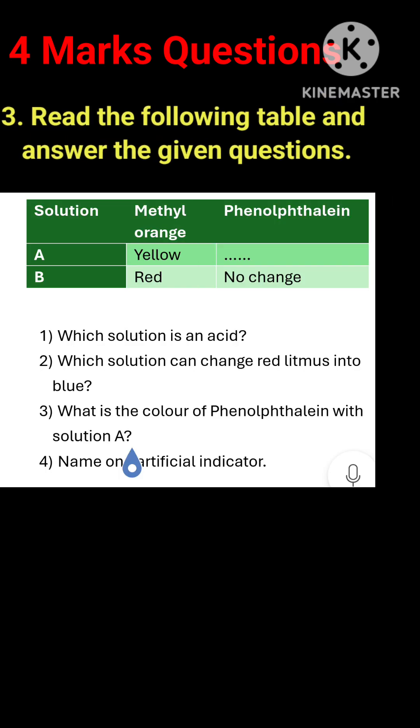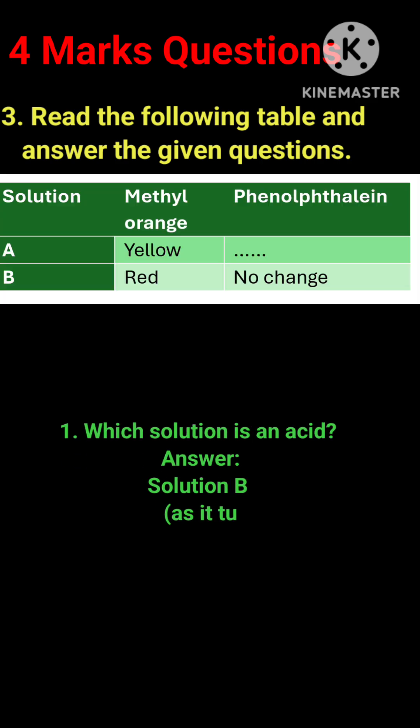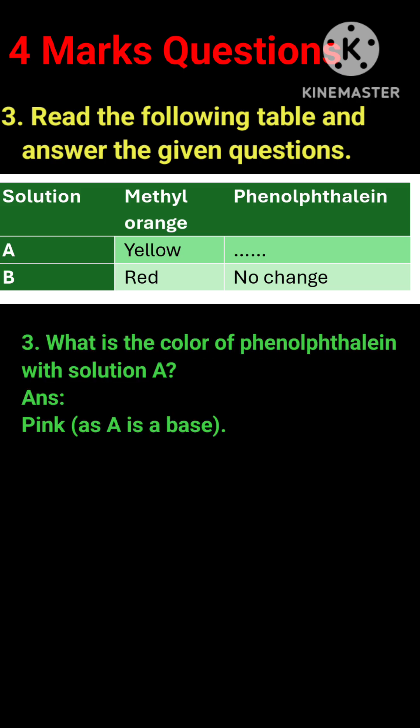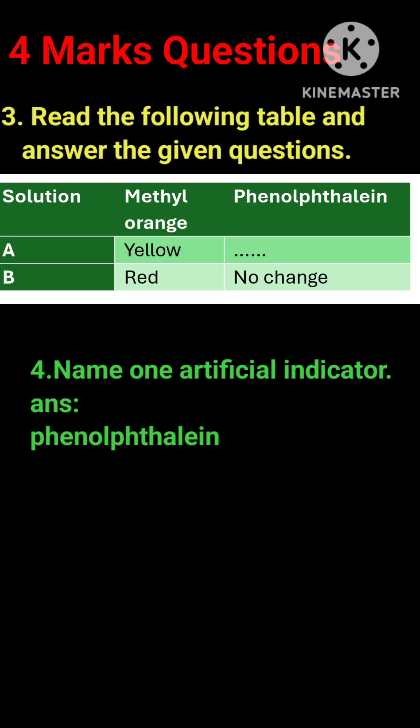Question 3: Read the following table and answer the given questions. (1) Which solution is an acid? Answer: Solution B, as it turns methyl orange red. (2) Which solution can change red litmus into blue? Answer: Solution A, as it is a base. (3) What is the color of phenolphthalein with solution A? Answer: Pink, as A is a base. (4) Name one artificial indicator. Answer: Phenolphthalein.